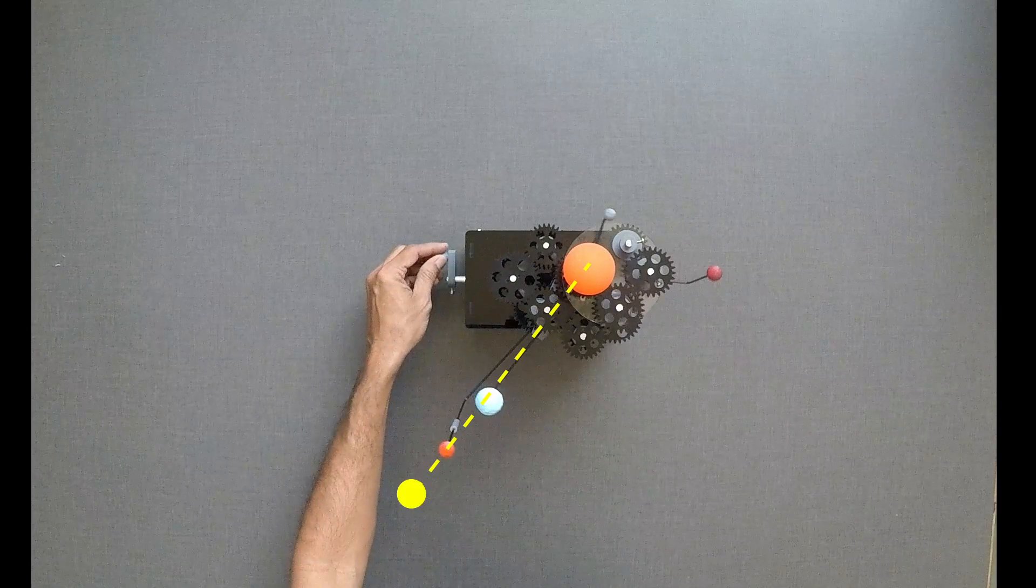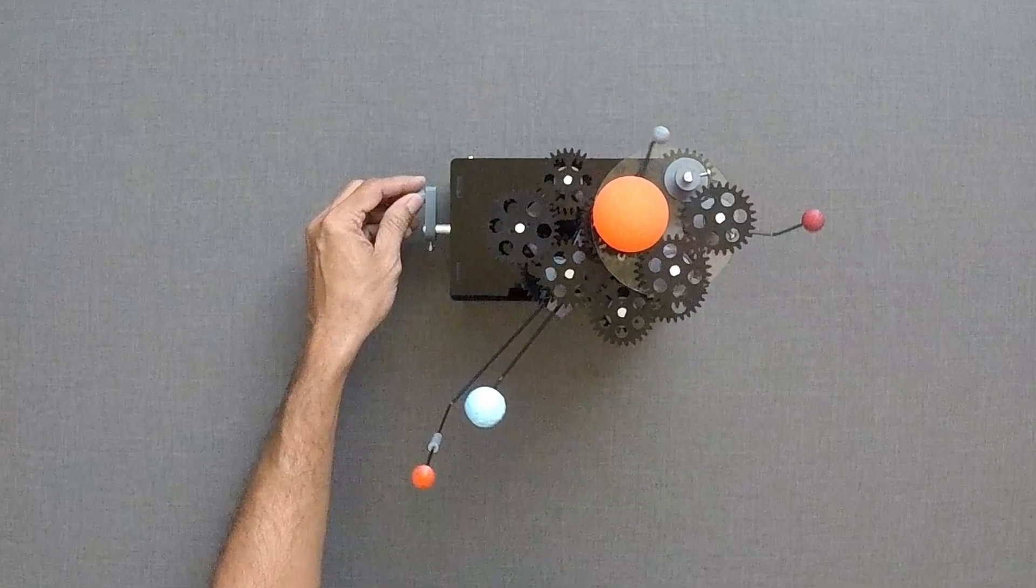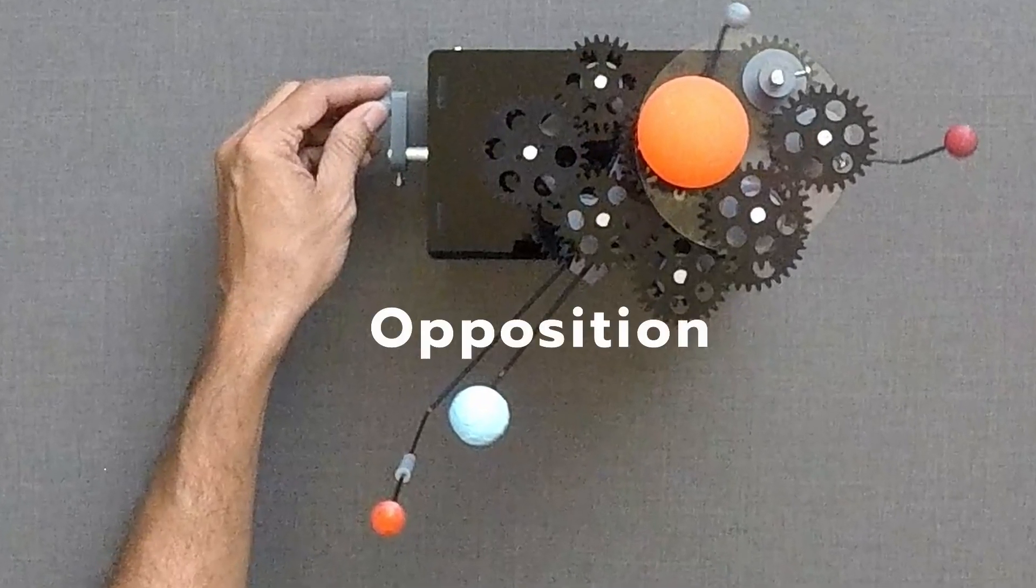At this point, Mars and Sun are directly on the opposite sides of the Earth. They are said to be in opposition.